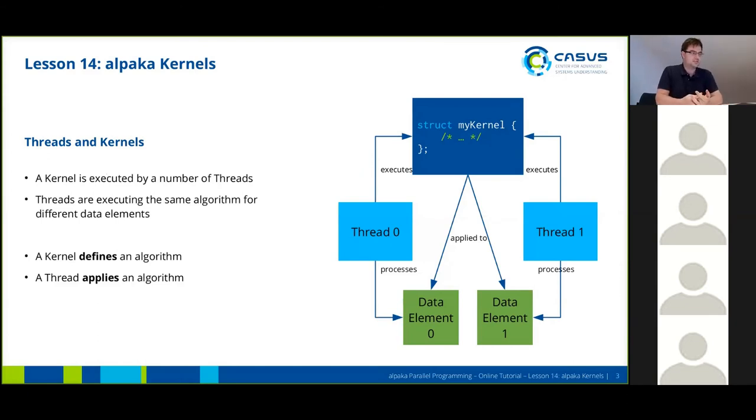So what's exactly the difference between a kernel and a thread? A kernel basically is just there and it's an algorithm and it is executed by a number of threads. Threads on the other hand are all executing the same algorithm for different data elements. So thread 0 will apply the kernel to data element 0, thread 1 will apply the kernel to data element 1, and so on.